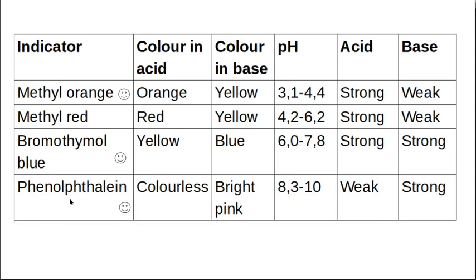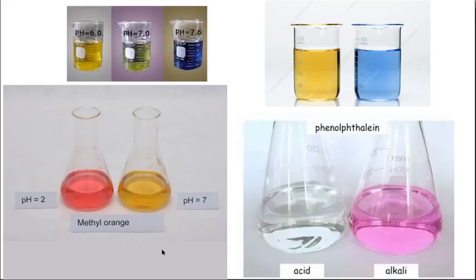Phenolphthalein goes from colorless to bright pink at pH 8.3 to 10 — an alkaline or basic pH — and you use it for a weak acid and a strong base. For a school open day demonstration, to avoid wasting chemicals, vinegar was used as the weak acid — it's cheap — mixed with sodium hydroxide, using phenolphthalein because of its very striking color change.